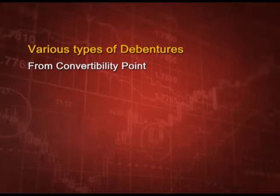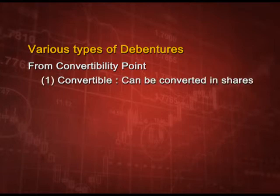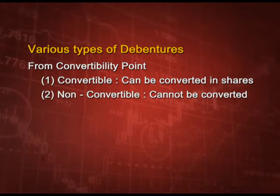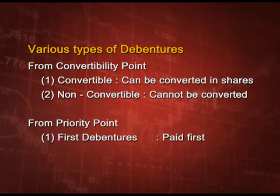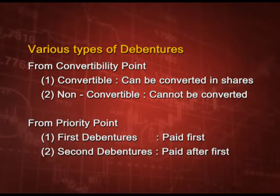From a convertibility point of view, if debentures are convertible into shares they are called convertible debentures, and if not convertible they are called non-convertible. From a priority point of view, debentures to be paid first are called first debentures, and those paid after are called second debentures.